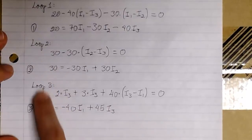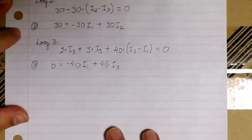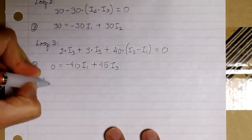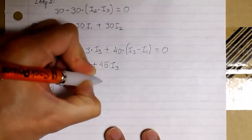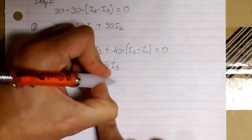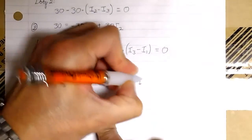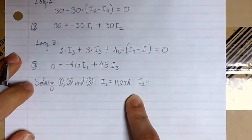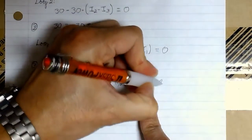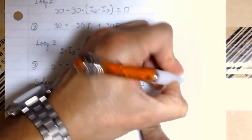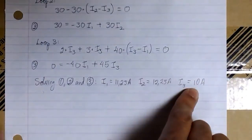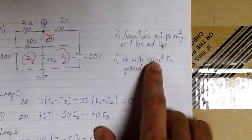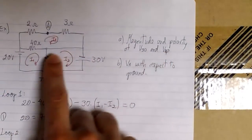So we have equations 1, 2, and 3 with three unknowns I1, I2, and I3. Solving the three equations, we get I1 equal to 11.25 amps, I2 equal to 12.25 amps, and I3 equal to 10 amps. We are now going to use these three loop currents to find the real currents in the circuit so we can determine the magnitude and polarity of V30 and V40.